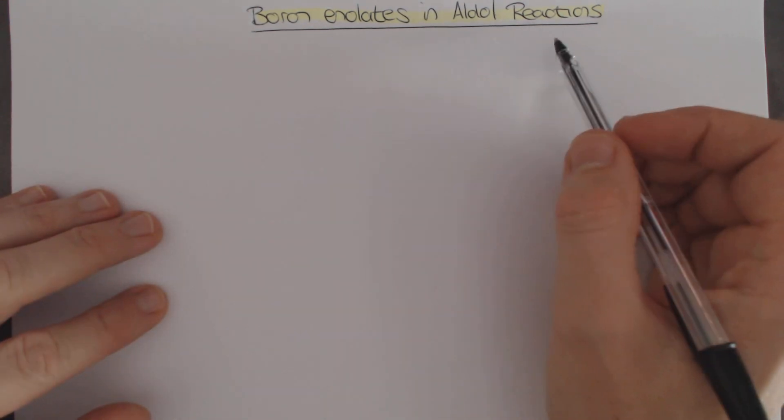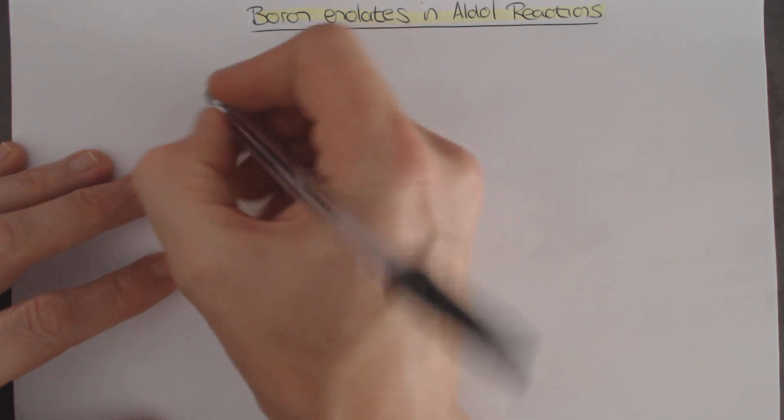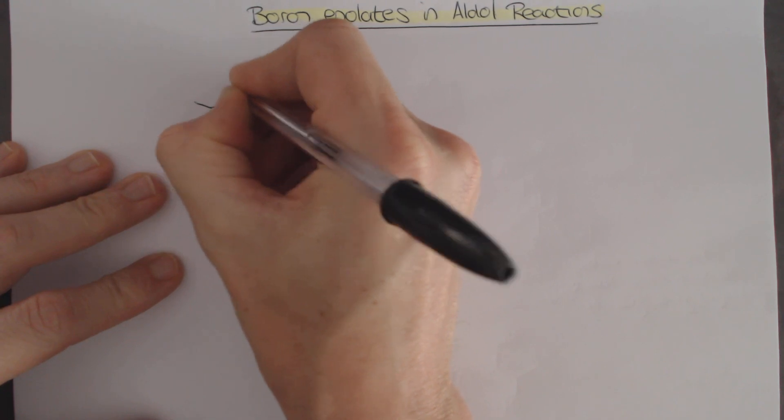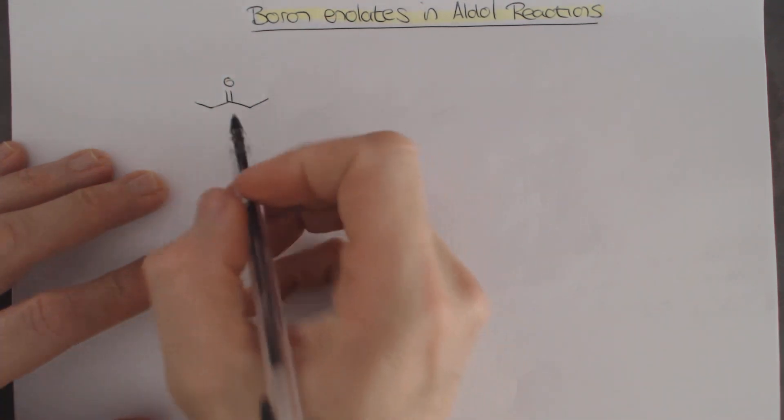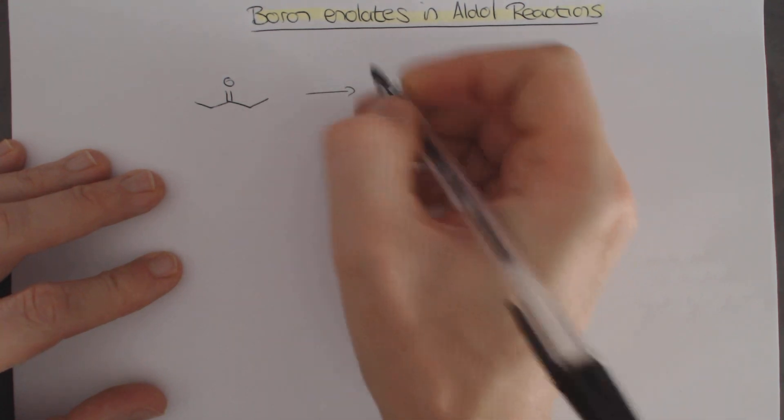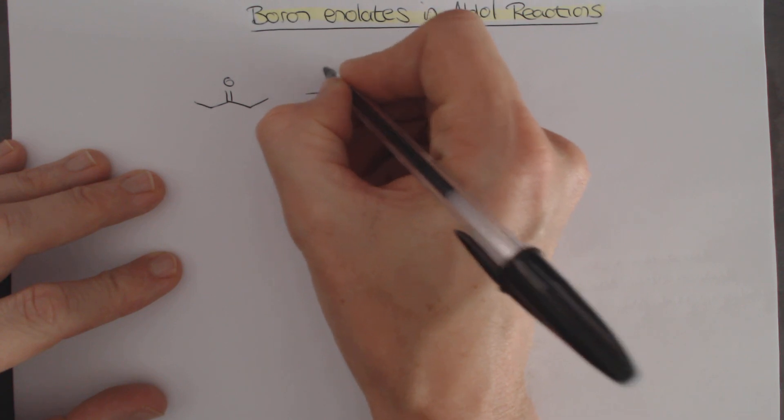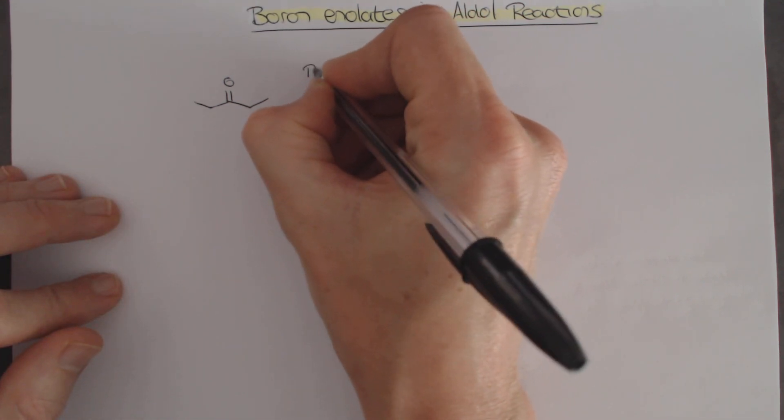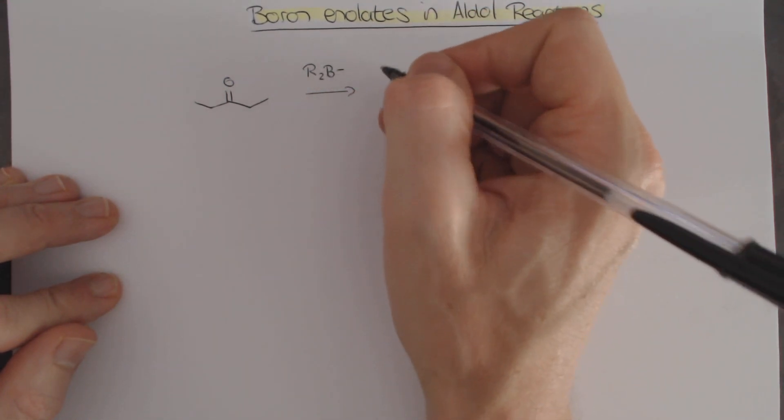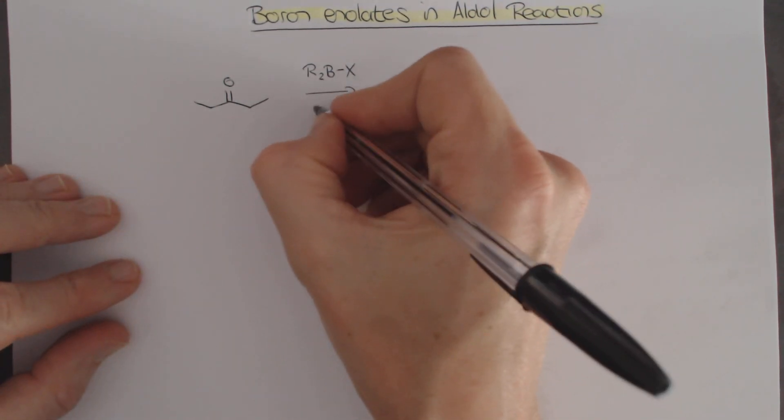Boron enolates are fantastic in aldol reactions, but the greatest importance is actually in their control of the reaction that we get. Here's a classic example: taking a symmetrical ketone like this and treating it with a boron enolate. When we treat it with a boron enolate, we're treating it with a dialkyl borane reagent. There are two groups attached to the boron and then there's some leaving group on this boron, so we can just write an X over there. Typically we must also use a base.